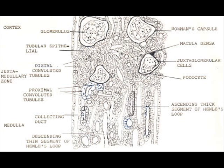The pelvis collects urine from the renal tubules via the minor and the major calyces.